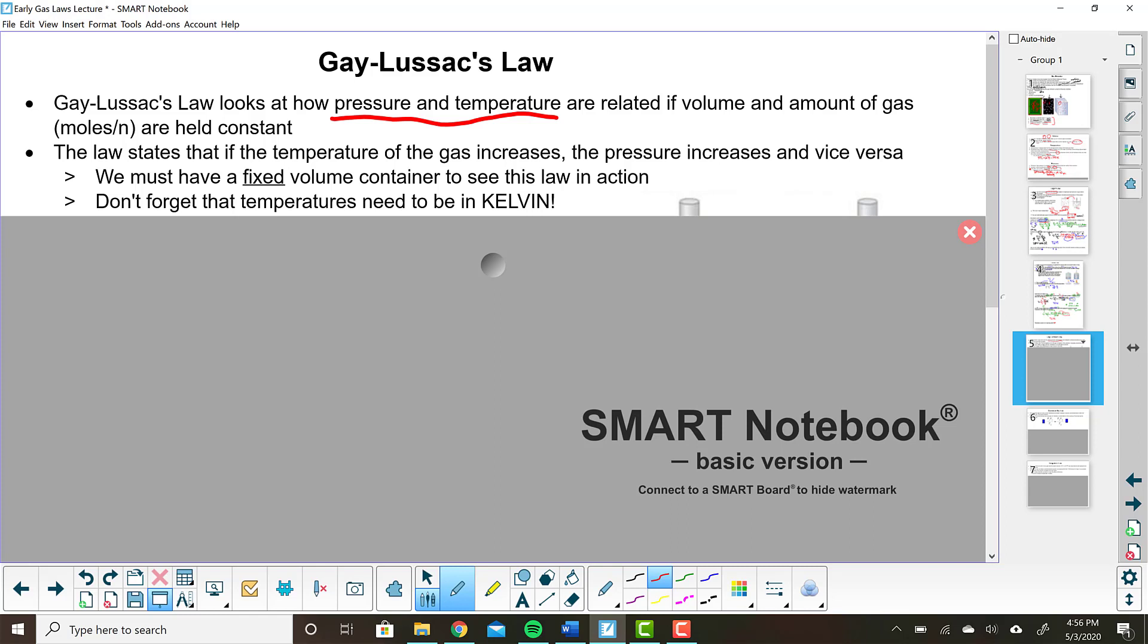Now Gay-Lussac's law states that if the temperature of a gas increases the pressure increases. So if you think back to Charles's law, Charles's law said that if the temperature of the gas increases the volume of the gas increases. But this time we have a fixed volume, meaning the volume cannot change. It's constant. So maybe you've already got a prediction in your head about why the pressure would then increase.